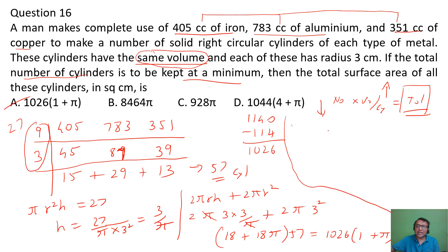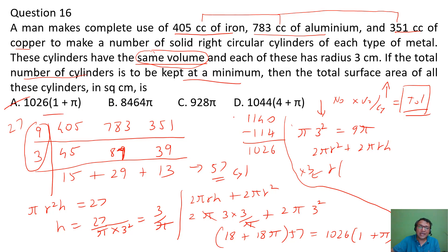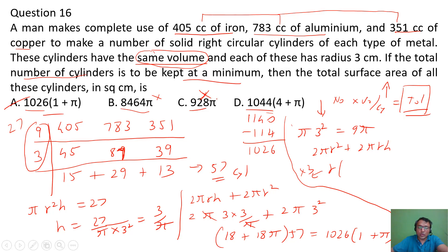You can actually eliminate two options directly: since radius is 3, the area involves πr²=9π, and 2πrh also has r as a factor, so the total surface area must be a multiple of 3. Only options A (1044) and D (1026) are multiples of 3; the others — 8, 4, 6, 4, 9, 28 — are not multiples of 3, so you can eliminate them. But you can also fully solve to find the number of cylinders, the surface area per cylinder, and arrive at the answer that way.